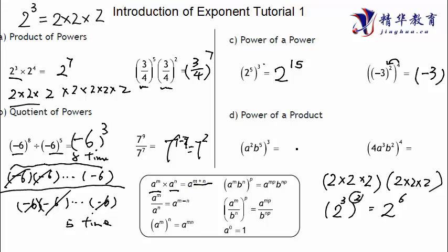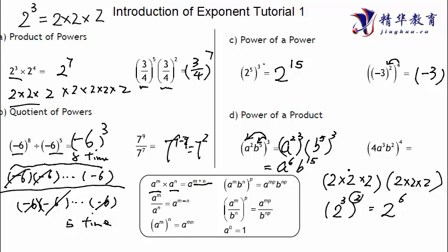Power of a product: the outer power applies to each factor. So for (a² × b⁵)³, the power of 3 applies to a² and to b⁵ as well. We can separate them: a to the power of 2 times 3 equals a⁶, and b to the power of 5 times 3 equals b¹⁵.